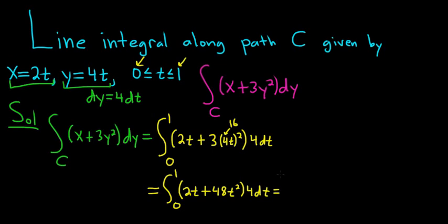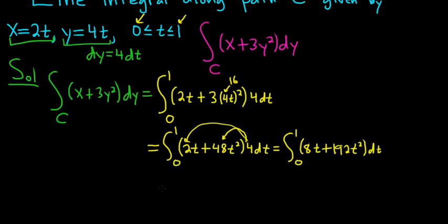I'm going to go ahead and distribute the 4. So this is the definite integral from 0 to 1. So 4 times 2 is 8, so we get 8t. And then 4 times 48 is 192, t squared dt. Yeah, really easy to mess up on. That's just the basic multiplication and stuff. Always be careful.